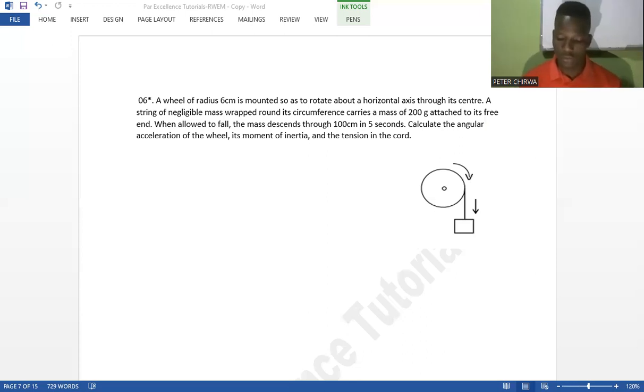So this is the mass. This mass has got weight mg, and there is a tension T. We need to find the tension force in that string. If allowed to drop, we are told it drops 100 centimeters in 5 seconds. We have our time: 5 seconds.